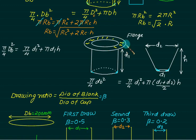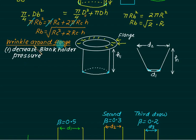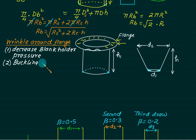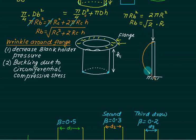The flange material tries to expand and is restricted, generating circumferential compressive stress. This causes buckling — the flange develops a wavy, contoured shape (wrinkles). Buckling is analogous to applying a compressive load to a thin plate: if in the plastic mode, a permanent shape change results. This waviness is undesirable and is the primary cause of wrinkling in deep drawing.